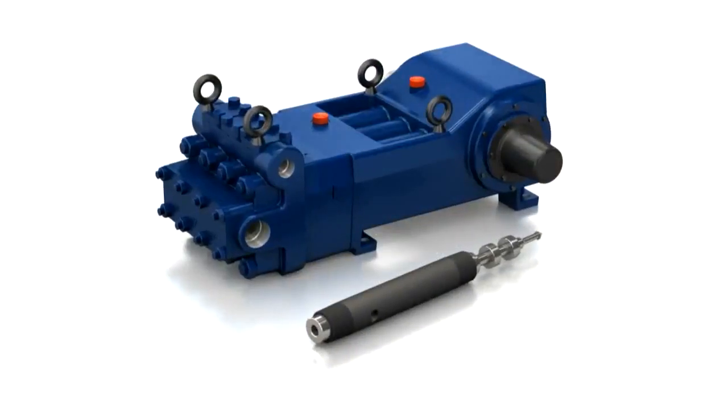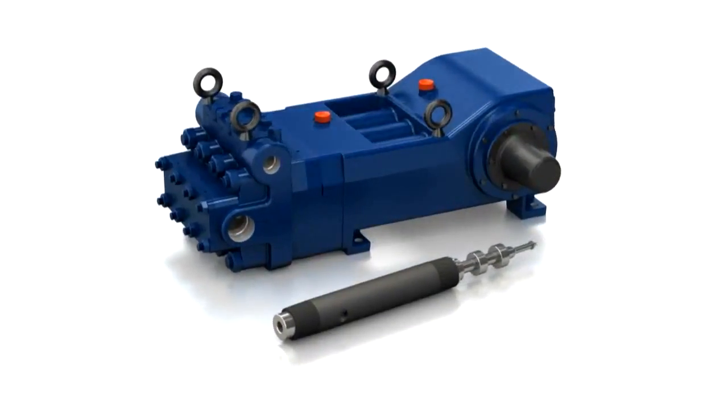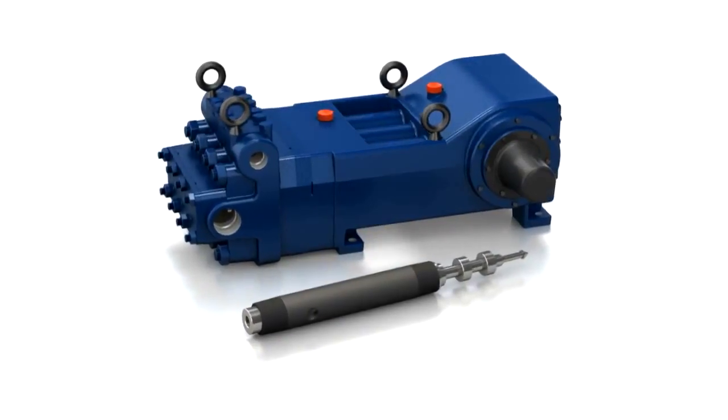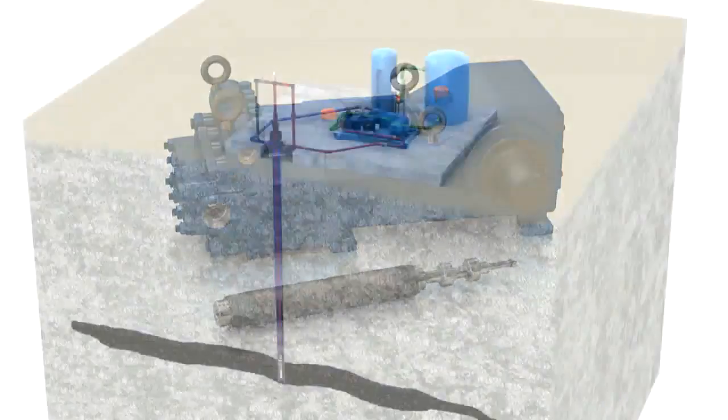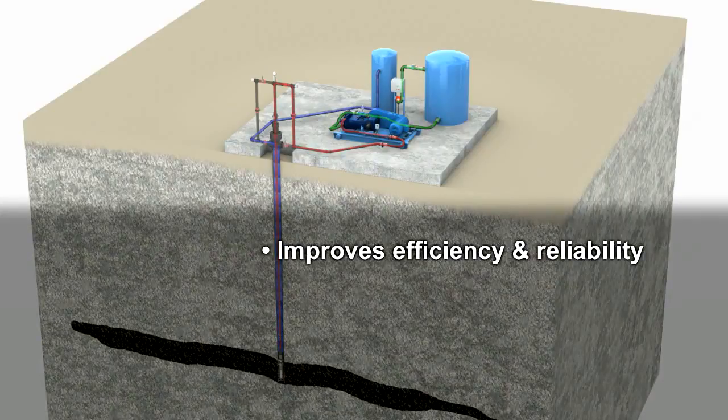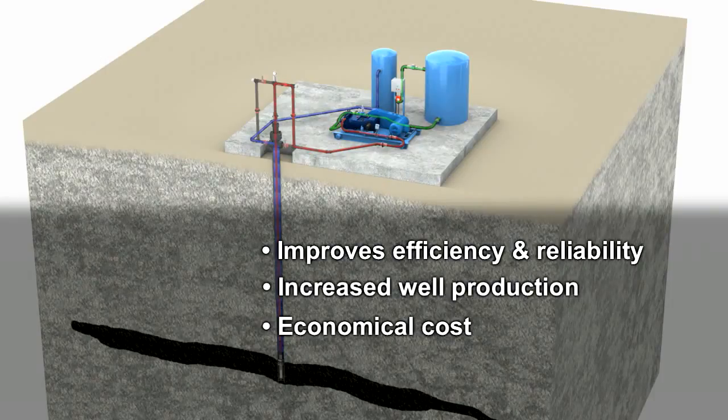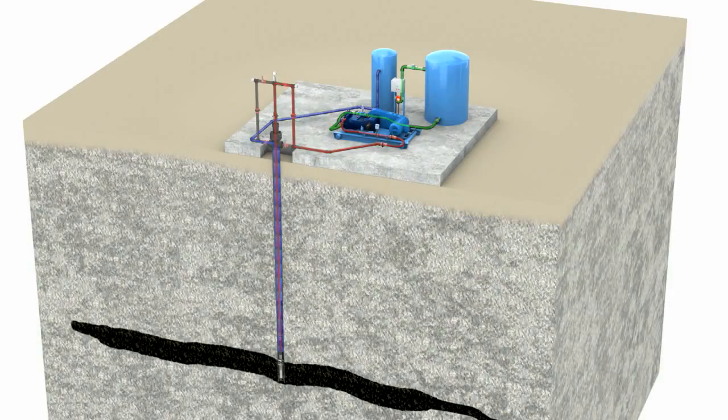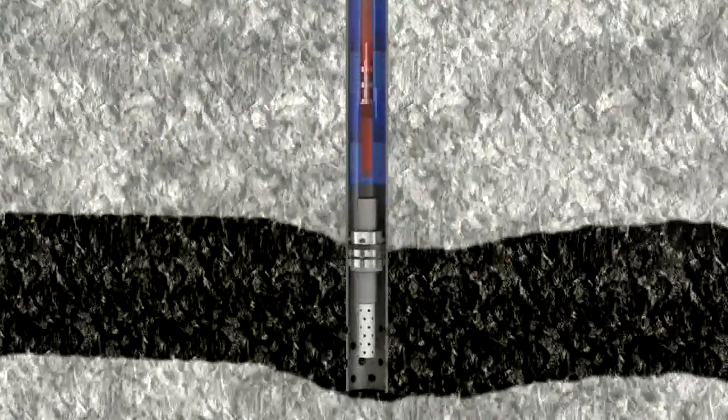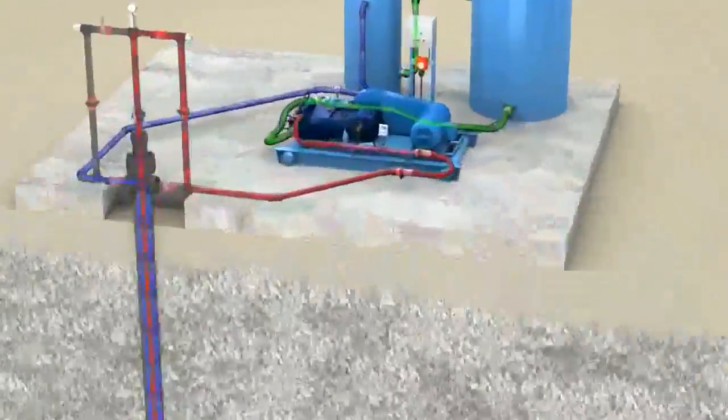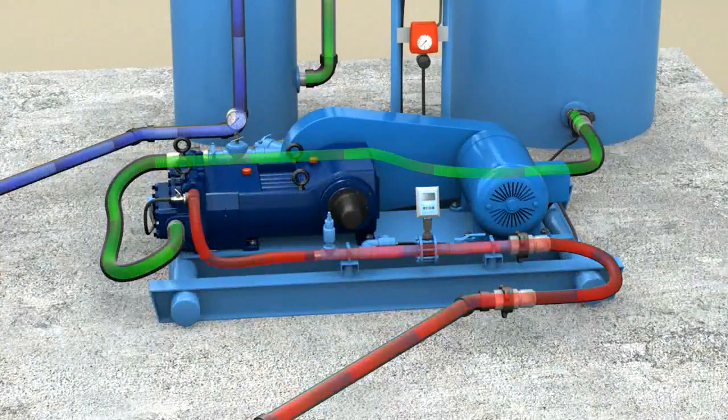The UltraFlow hydraulic production system from JJ Tech solves these critical problems and others. Hydraulic pumping in general expands lifting applications, improves reliability, and provides increased well production at a more economical cost. The UltraFlow system maximizes the benefits of hydraulic pumping by combining a patented downhole jet pump with a highly efficient surface mounted HydraCell diaphragm pump.